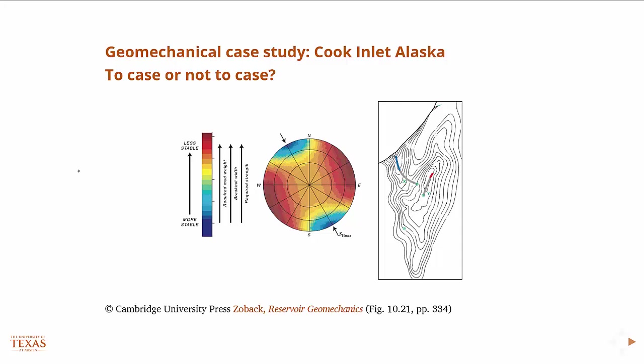This is a case study that Zoback refers to in several places in the book and it has to do with this project at the Cook Inlet in Alaska. Here the ultimate question is, do they case the well or not case the well? Specifically in a location where they had a main borehole and they were kicking off multiple horizontals. So they were trying to know, do we need to case all of these horizontals or not? Because of course if you can not do it, you save money.